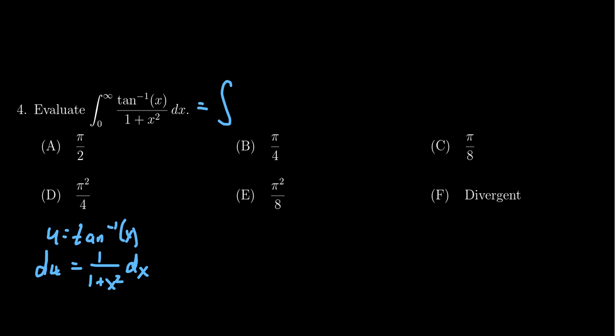So I could rewrite this integral as simply, well, the tangent inverse becomes a u, the dx over one plus x squared becomes a du. That's fantastic. But then we need to adjust the bounds as well.